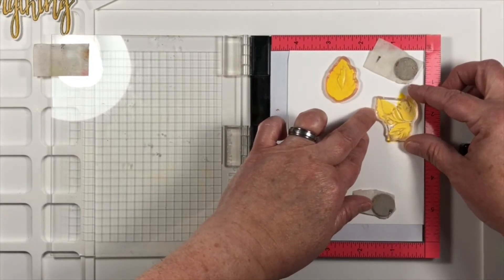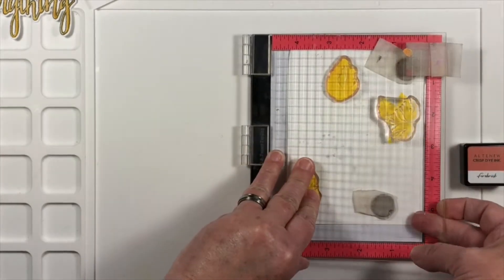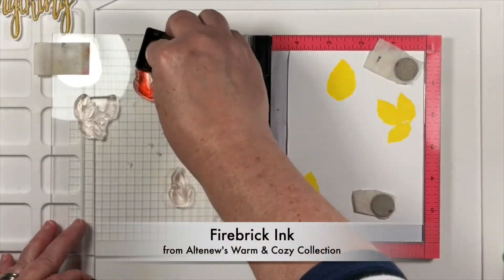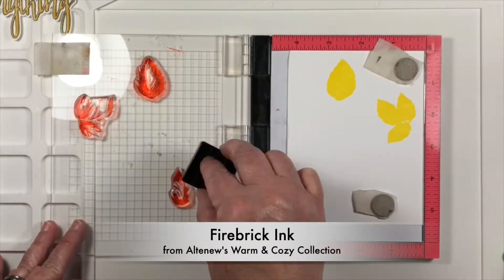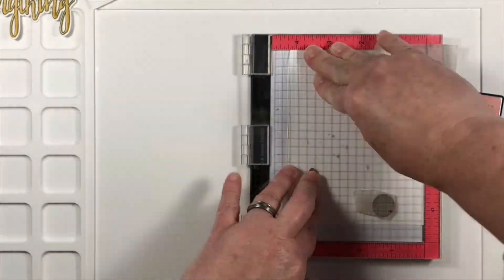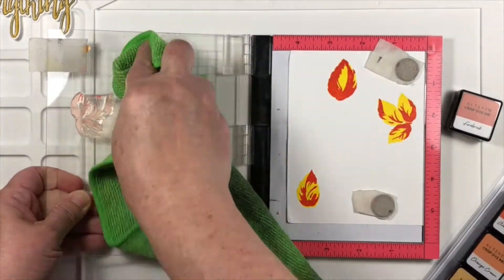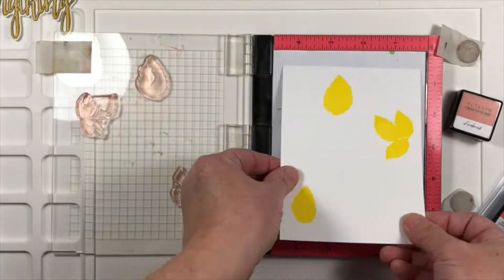And then I'm taking that second of the layering stamps, the second in the series, and I'm using a reddish orange color and it's going to give a little more contour and detail.